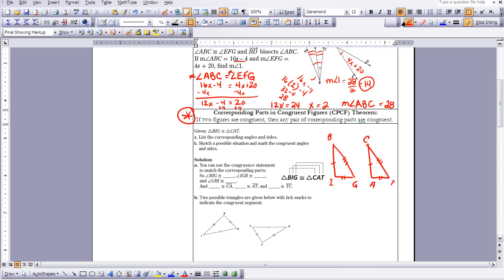But you can also draw a picture if it's easier for you to see. As you can see, I drew two triangles that are the same, and I labeled them BIG and CAT. When you make your congruent statements, the first thing you need to make sure is that your vertices of your triangle or your figure match up.